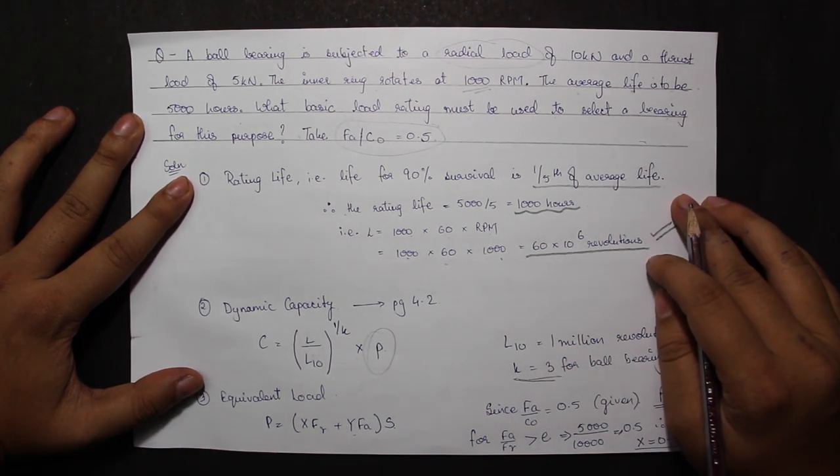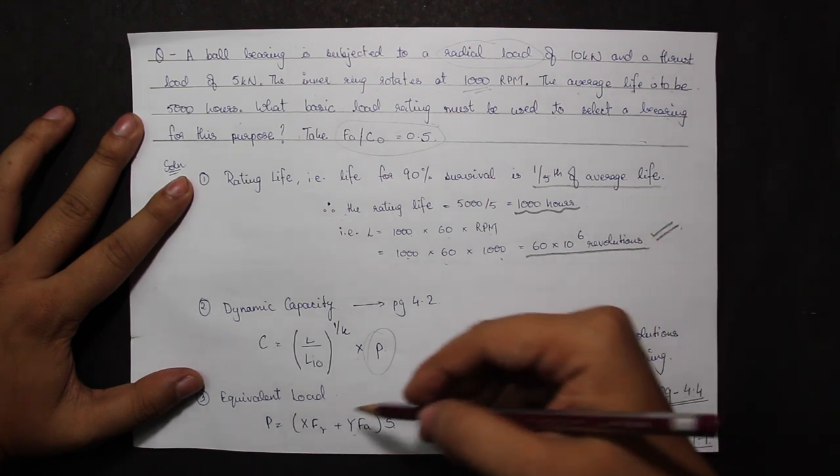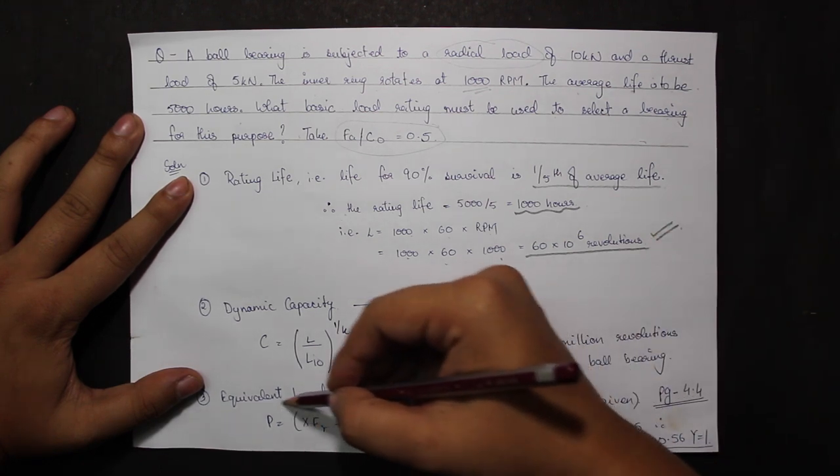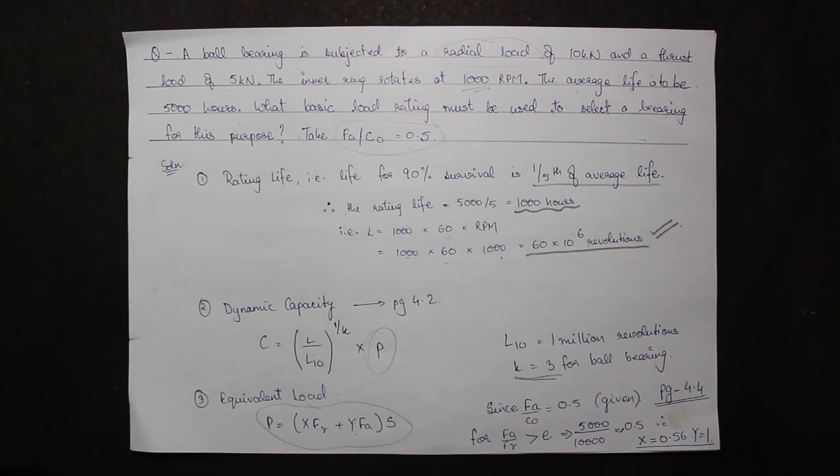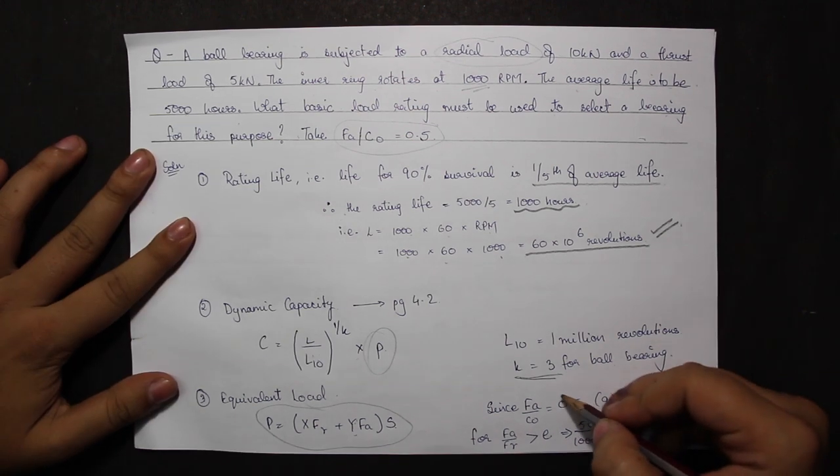To calculate the equivalent load, I have the formula just above dynamic capacity. P is equal to XFR plus YFA into S. It is given in the question that FA by C0 is equal to 0.5.